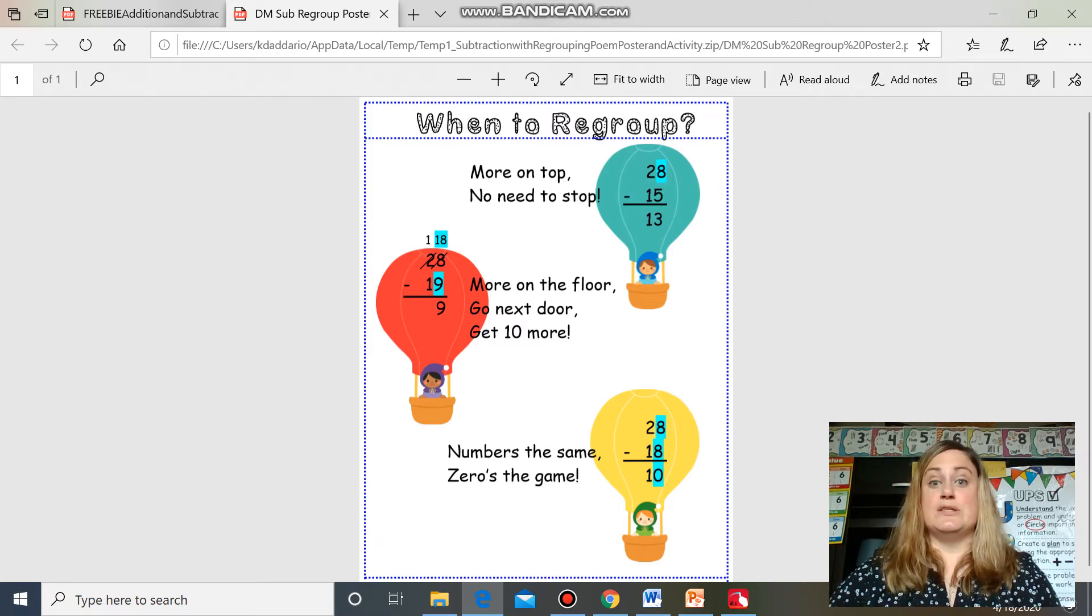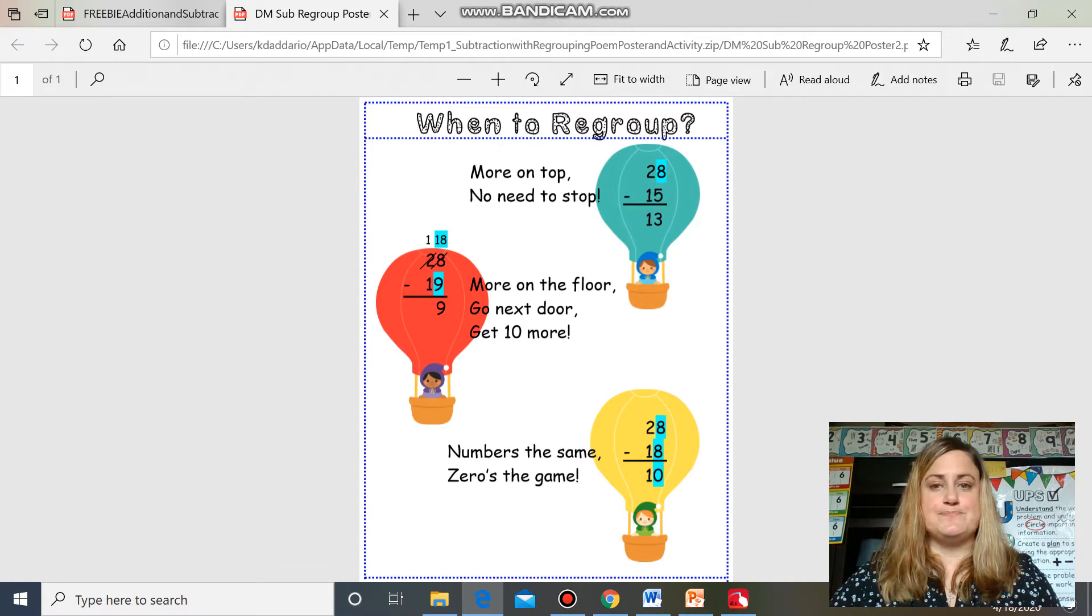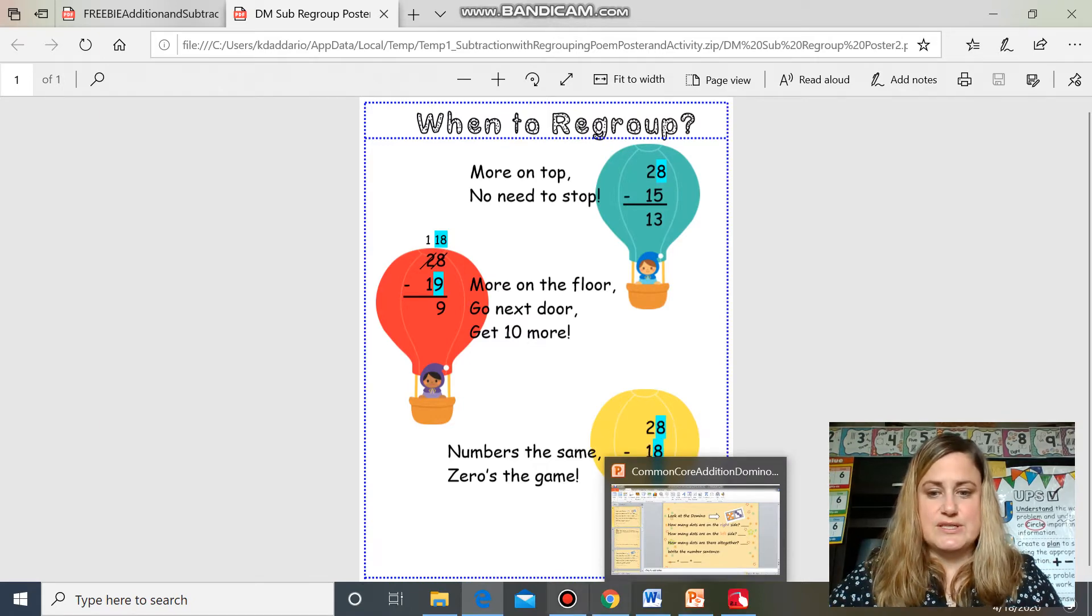If there's more on top, no need to stop. Just like this example. The next one we say more on the floor go next door and get ten more or numbers the same zeros the game. So hopefully we didn't forget those rules and hopefully you can remember those rules when we are practicing our two digit subtraction.